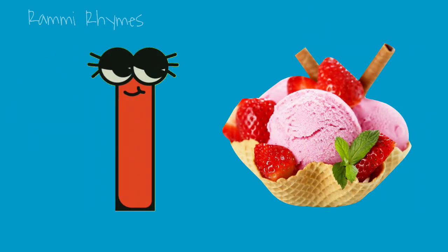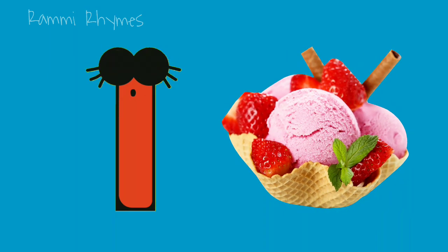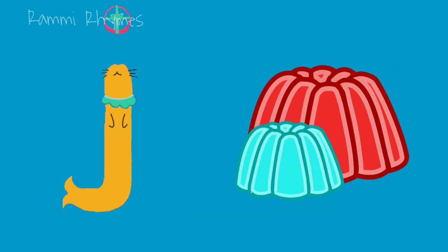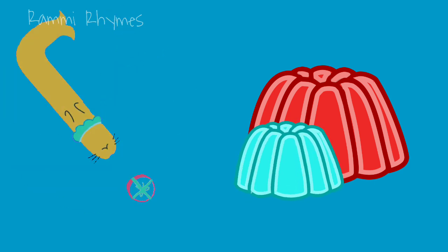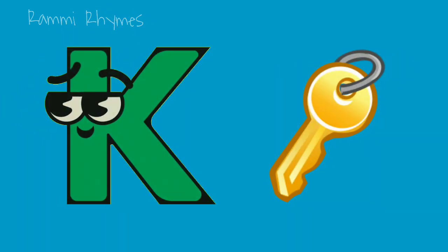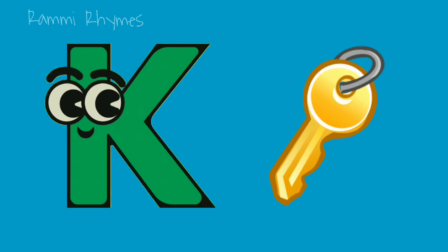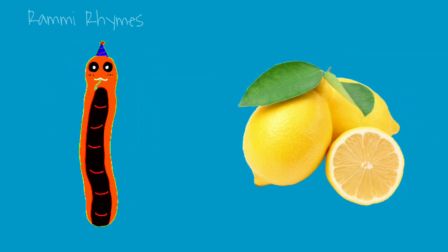I is for ice cream. J is for jelly. K is for key. L is for lemon.